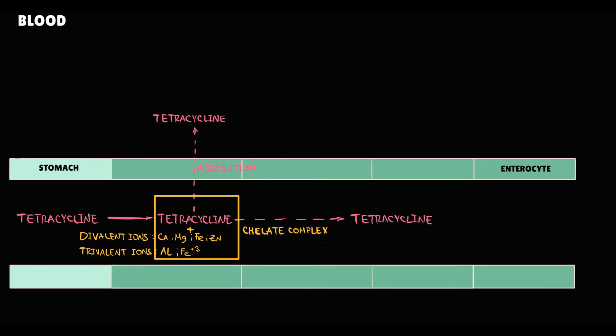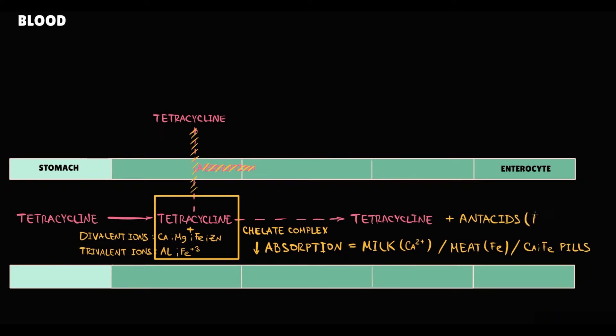The major problem is that in the form of chelate complexes, tetracyclines cannot be absorbed. So there are some agents that can decrease tetracycline absorption. First of all, dairy products as milk with high calcium content or meat with high iron content. Also calcium and iron supplements and antacids that have high aluminum content. All these agents can greatly decrease tetracycline absorption.